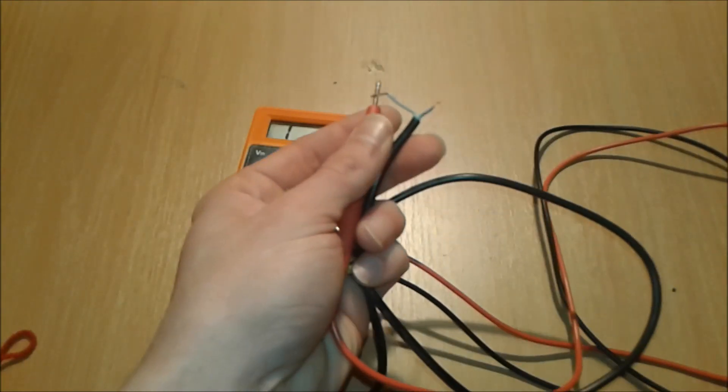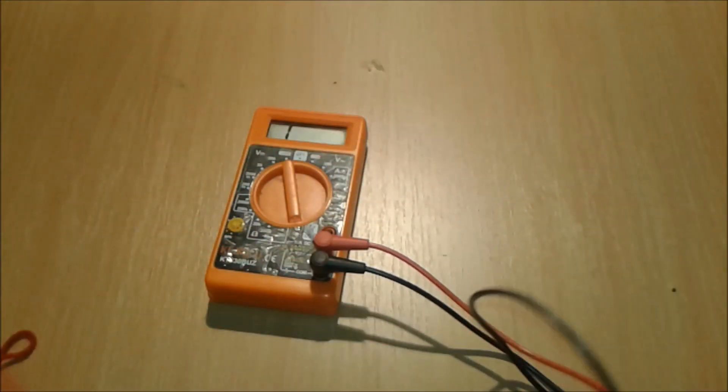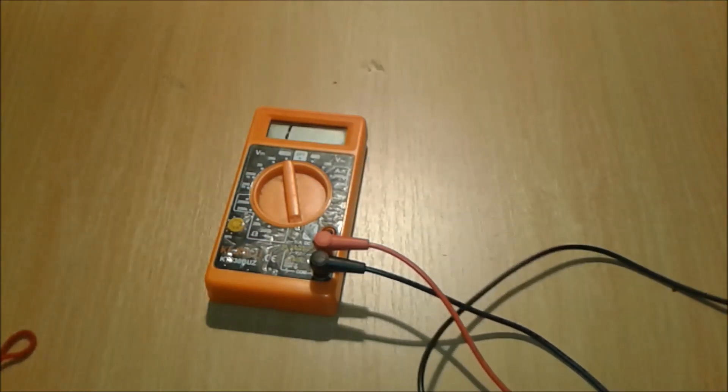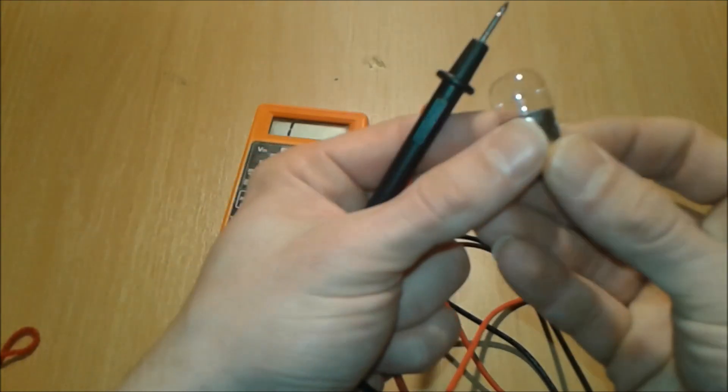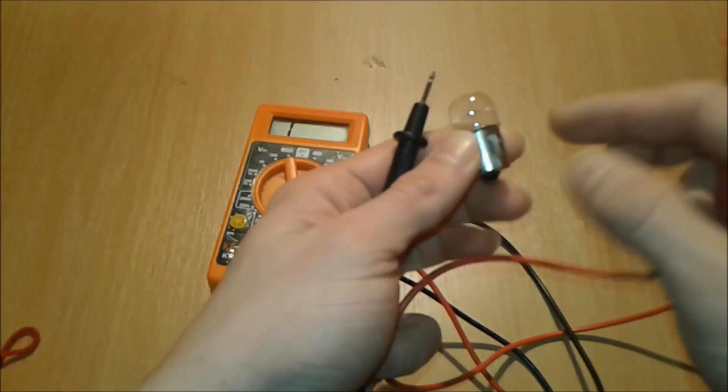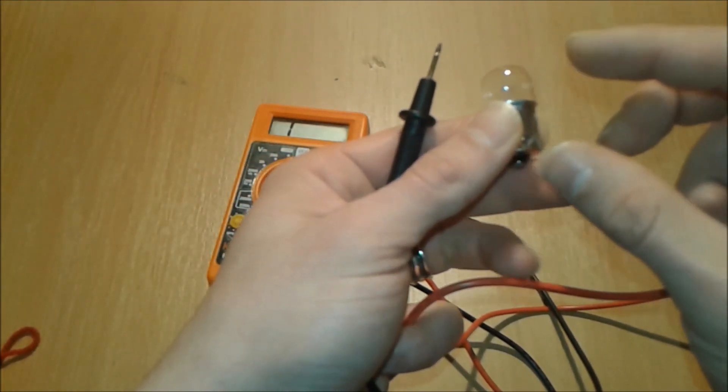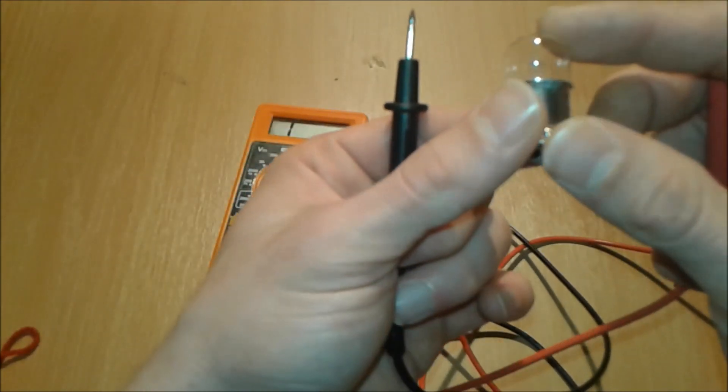Another application for the continuity test is a regular car bulb like this one. If you can see it, the filament is broken. But in some cases the filament is very thin and you can barely see it, so you can check the bulb with a multimeter.